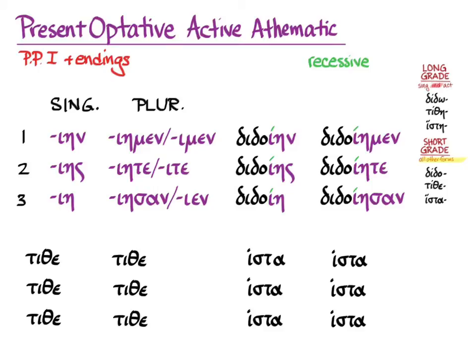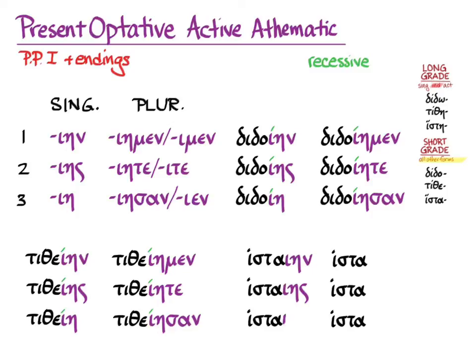So: didoien, didoies, didoie, didoiemen, didoieta, didoiesan. The same thing happens with tithemi, except in combination with tithemi's epsilon it becomes a different diphthong: tithaien, tithaies, tithaie, tithaemen, tithaeta, tithaiesan. The endings here don't have a thematic vowel for different tenses — they simply have the markers for optative-ness, those iotas, and the person markers. That's how, when we add them to these athematic verb stems, we get these forms.